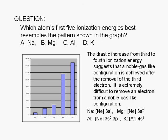The drastic increase from the 3rd to 4th ionization energy suggests that a noble gas-like configuration is achieved after the removal of the 3rd electron. Once a noble gas-like configuration is achieved, it becomes drastically more difficult to remove the next electron.